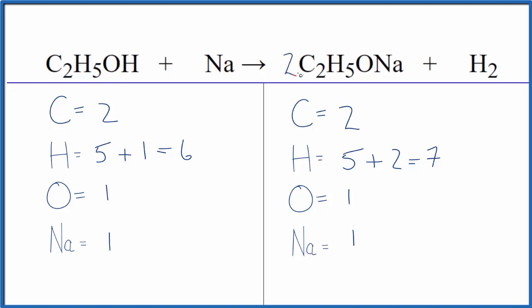So I'll put a two here, two times two, that's four, and I will need to update the hydrogens. So I have the two times the five. That gives me 10. And then I've got these two out here. I have to remember those. That gives me 12. So that's an even number.